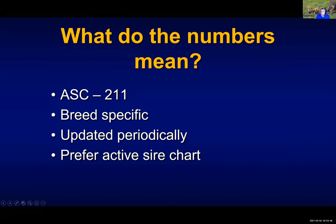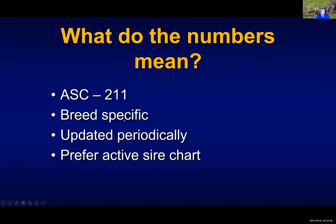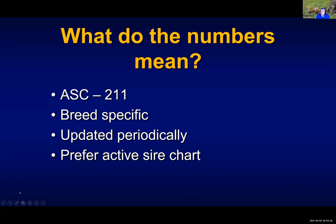We have a fact sheet called ASC 211 that goes through the definition of the different traits for many of the breeds and the nomenclatures that are used. Remember, these charts are breed specific — you can't use the same chart for an Angus bull or a Charolais bull. They are breed specific and updated periodically. When you go on that website, you're going to have different charts — they'll have one for dams, one for young sires. I usually like to use the one for active sires, as I think that gives you the best overall picture of where that bull falls within the breed.